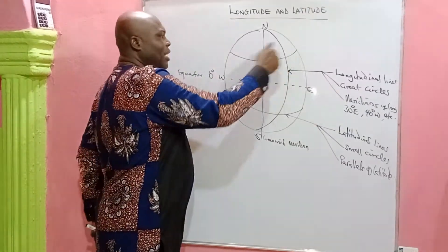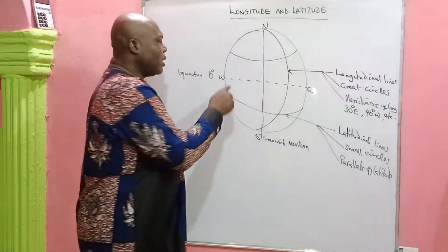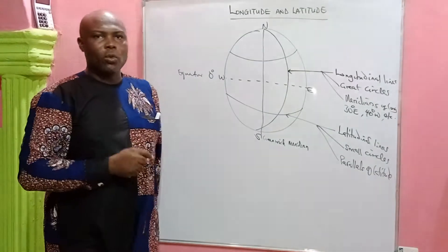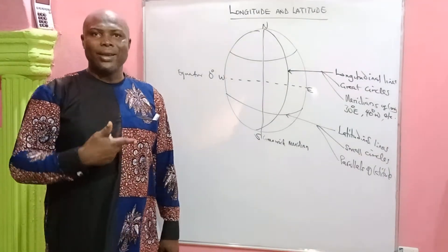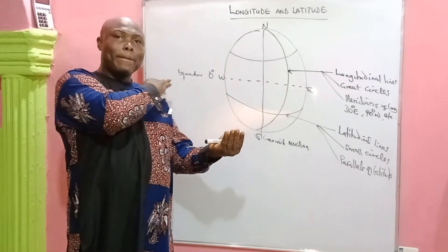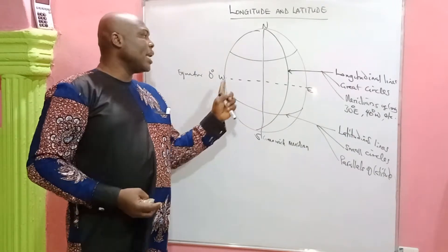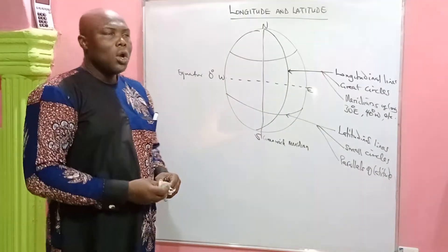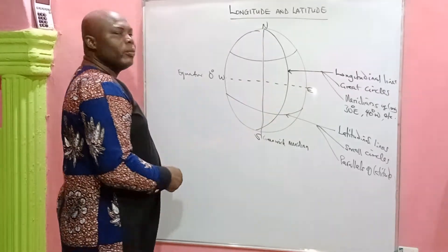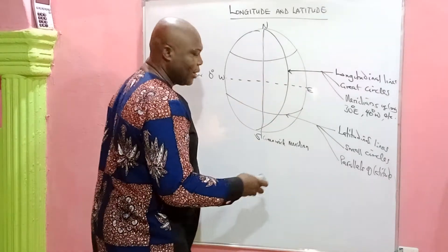Parallels of latitude run this way, and they are small circles. But the one that passes through the center, which is the equator, is also referred to as a great circle. When you take an orange and bisect it at the center, it gives you a great circle. So the equator is referred to as a great circle. With that, we are going straight to computation of distances along the great circles.